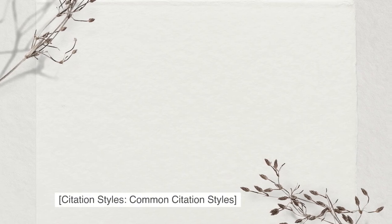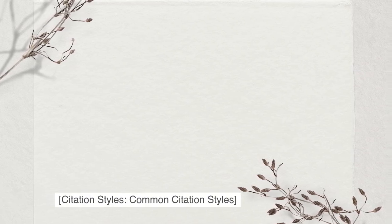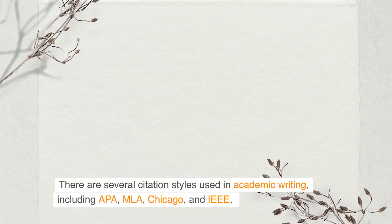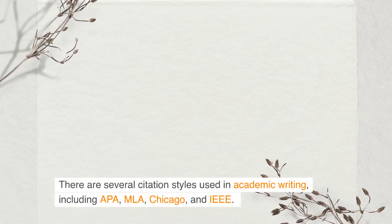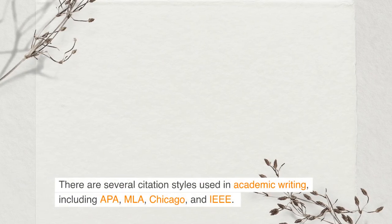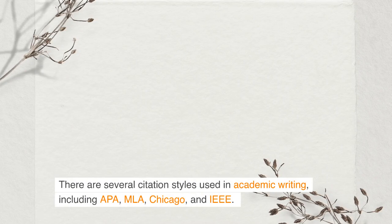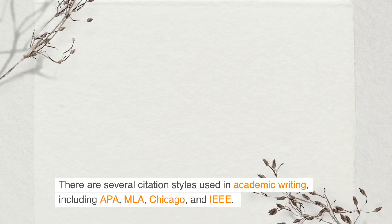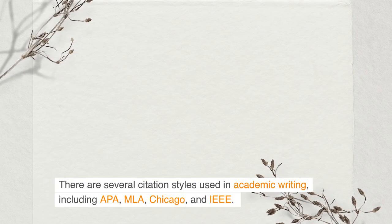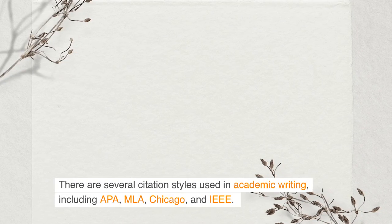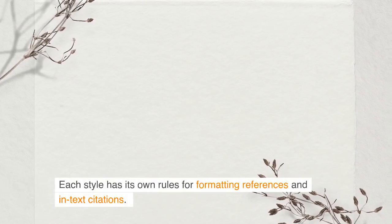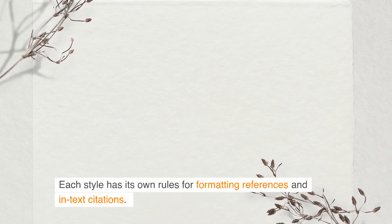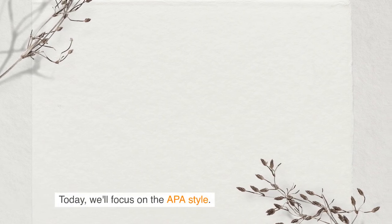Citation styles: there are several citation styles used in academic writing, including APA, MLA, Chicago, and IEEE. Each style has its own rules for formatting references and in-text citations. Today we'll focus on the APA style.